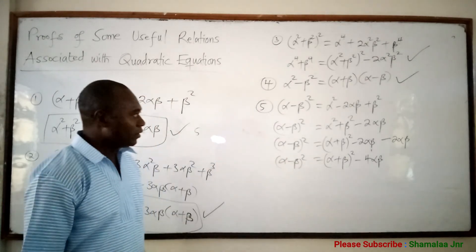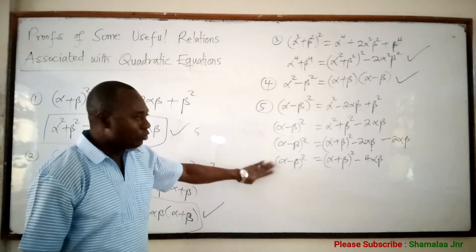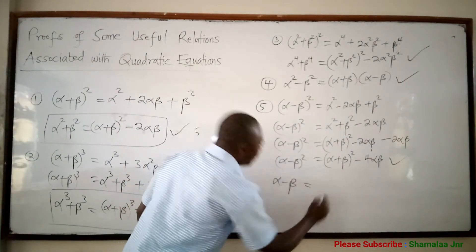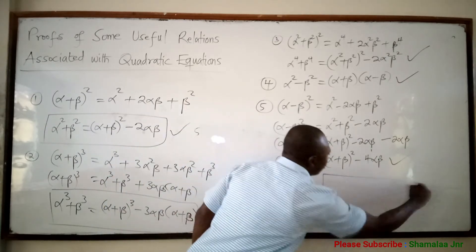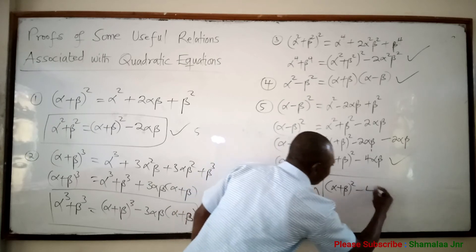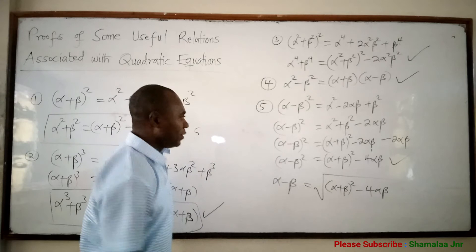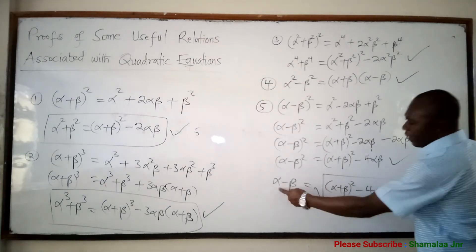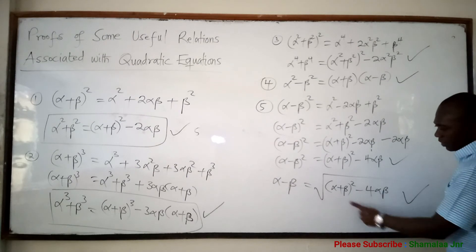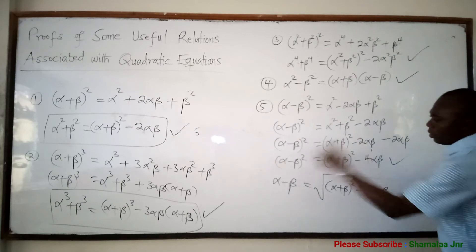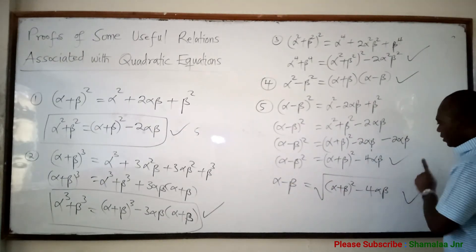So alpha minus beta squared equals alpha plus beta all squared minus 4 alpha beta. This is also very important. It means that alpha minus beta equals the square root of alpha plus beta all squared minus 4 alpha beta. So anywhere you see alpha minus beta, you can write this. Alpha plus beta is known and alpha beta is also known, so these relations are very important.